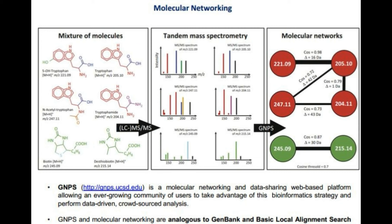The molecular network is analogous to a BLAST tool, and GNPS is like the GenBank database. In targeted metabolomics, we quantitatively identify and analyze targeted metabolic compounds in the organism, gathering information on metabolite composition closely associated with certain biological activities that can vary dramatically under different physiological conditions.